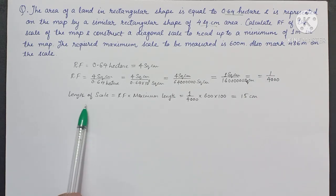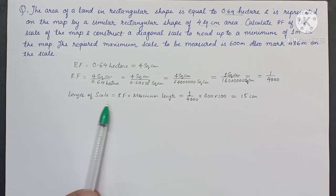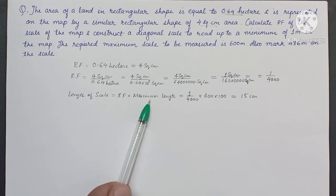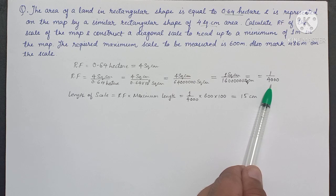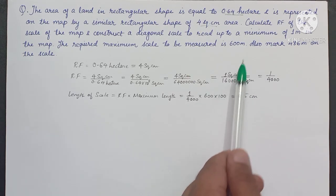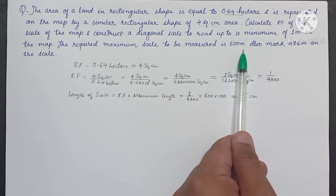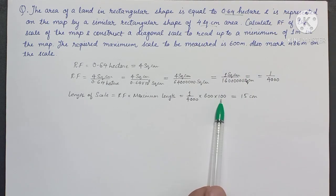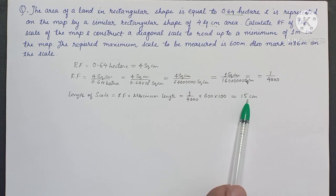Now determining the length of scale: that will be RF multiplied by maximum length. RF is 1 by 4000, multiplied by the maximum length to be measured, which is 600 meters. We convert it into centimeter by multiplying by 100, and we get the length of scale as 15 centimeter.